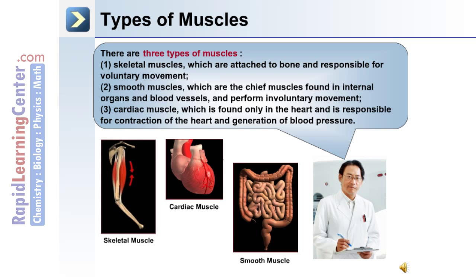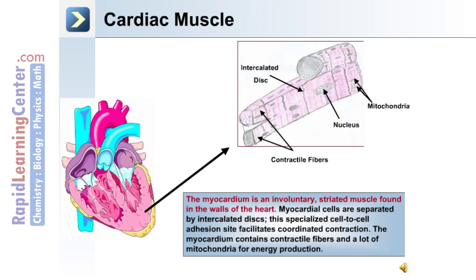Cardiac muscle, which is found only in the heart, is responsible for the contraction of the heart and the generation of blood pressure. The myocardium, or heart muscle, is an involuntary striated muscle found in the walls of the heart.